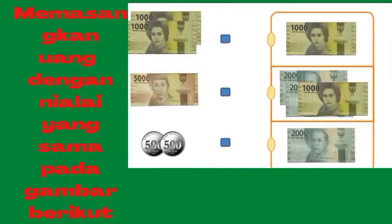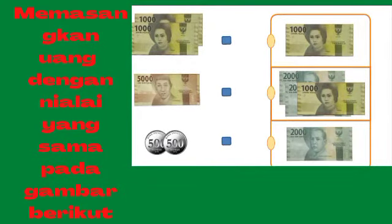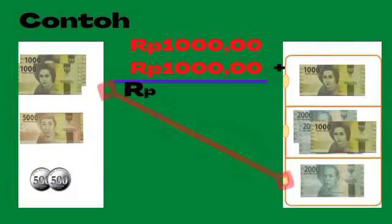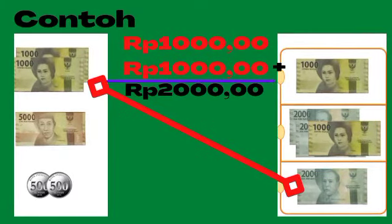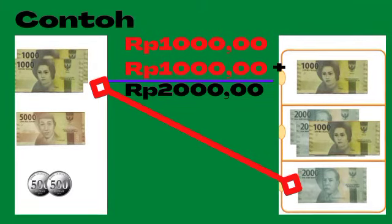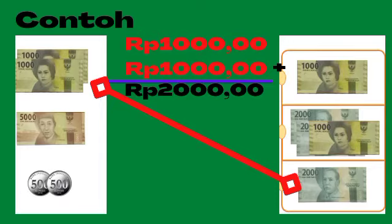Lanjut yaitu tentang matematika: memasangkan uang dengan nilai yang sama pada gambar berikut. Perhatikan gambar sebelah kiri dan kanan. Untuk dapat mengerjakannya, anak-anak jumlahkan dulu nominal uang yang terdapat di gambar sebelah kiri, lalu cari gambar di sebelah kanan yang jumlahnya sama. Contoh: di sebelah kiri ada dua uang seribu, berarti seribu ditambah seribu adalah dua ribu. Setelah itu tarik garis ke sebelah kanan yang jumlahnya sama. Seperti itu cara mengerjakannya.